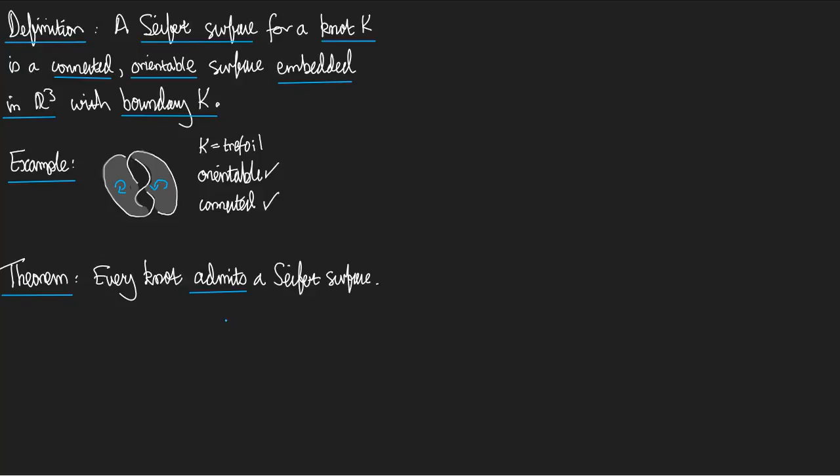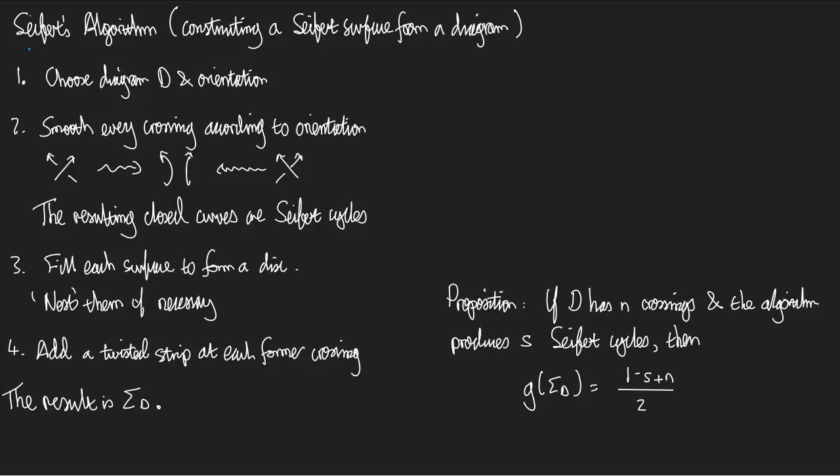Nevertheless, there is a theorem due to Seifert which says every knot admits a Seifert surface. So, for every knot, there is a Seifert surface. And the proof is very simple. He constructs it. This is Seifert's theorem. He proves it by constructing a Seifert surface for every knot. So, let's see how we do it. It's called Seifert's algorithm. It constructs a Seifert surface from a diagram.